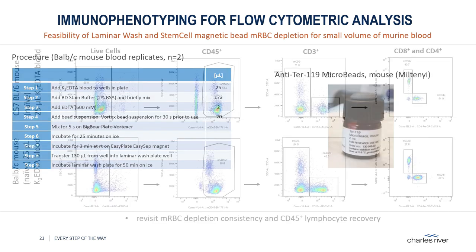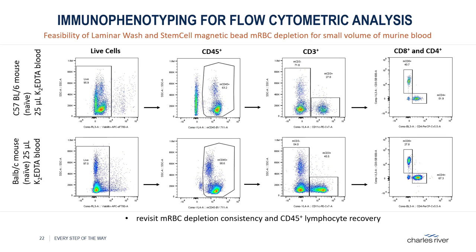As you can see from these preliminary results, repurposing the Miltenyi beads and applying our established methodology, we could stain mouse blood from different strains — C57 and BALB/c — for standard immune cell markers and identify quite well T, B, and NK populations. In these representative dot plots, only total T cells including CD4 and CD8 subsets are depicted. These are encouraging results, but we still have a lot more optimization work to do as we noticed inconsistencies with the RBC depletion and recovery of CD45 lymphocytes using this current setup — still very encouraging at this early stage.